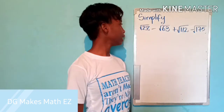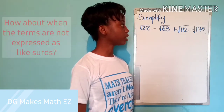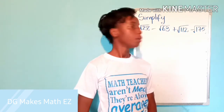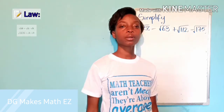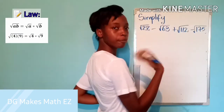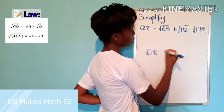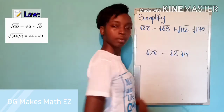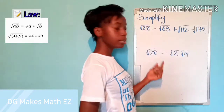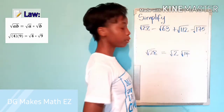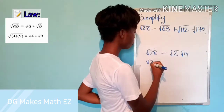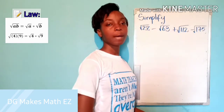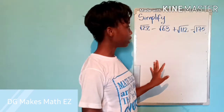In this question, simplify root 28 minus root 63 plus root 112 minus root 175. There is a law that we must know when dealing with roots: the root of a product is the product of the roots. For example, root 28 could be expressed as root 2 times root 14. As long as you know two factors of 28, you can express root 28 as the product of two roots. Or, root 28 equals root 7 times root 4. We are going to apply that principle to this question.